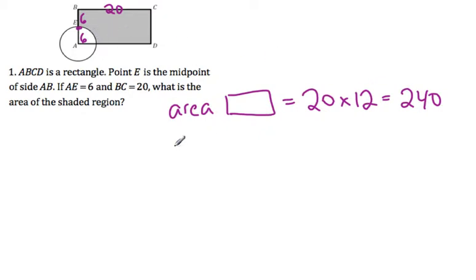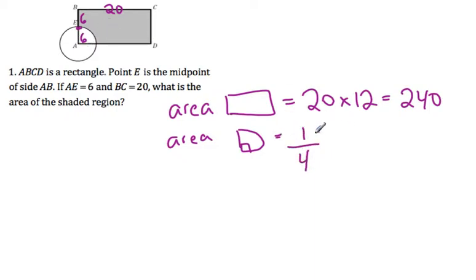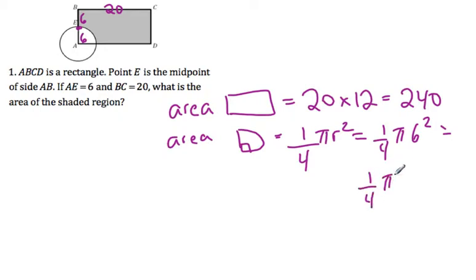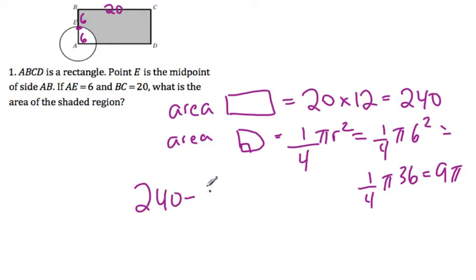Then we have to find the area of the quarter circle. We know it's a quarter circle because in a rectangle all angles are right angles. The area of a quarter circle is one-fourth pi r squared. The radius is 6, so it's one-fourth pi times 6 squared, which is one-fourth pi times 36, which equals 9 pi. We subtract the area of the quarter circle from the rectangle area to get our answer.